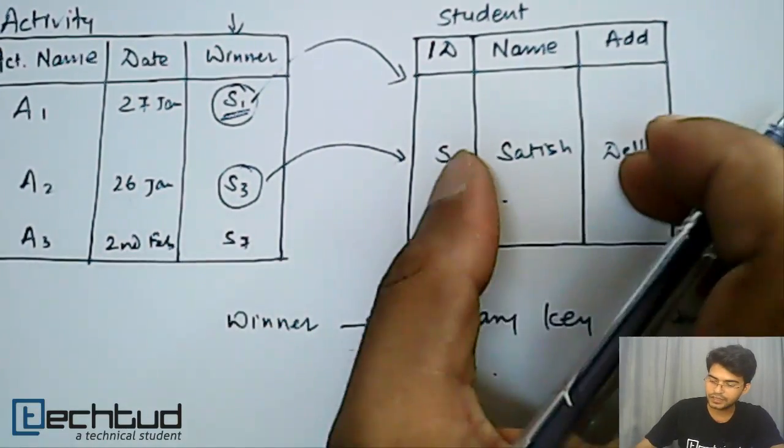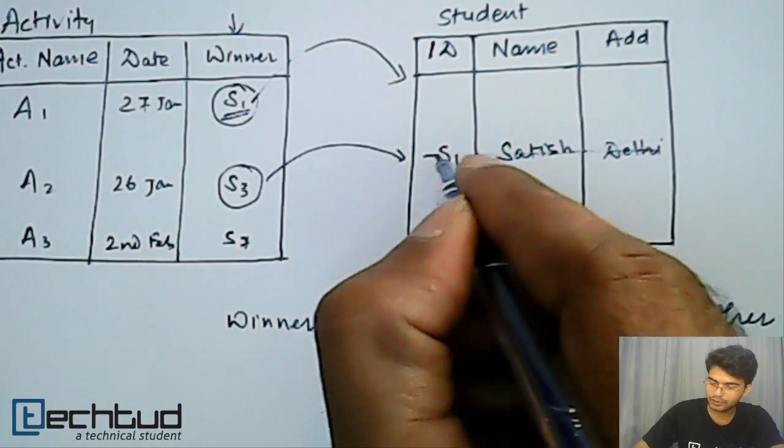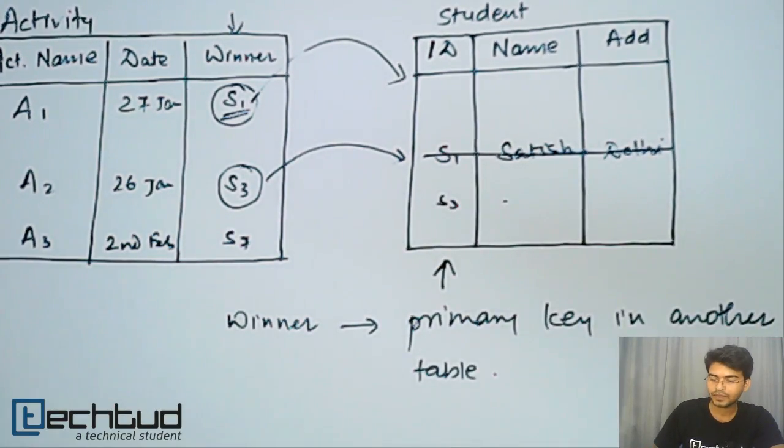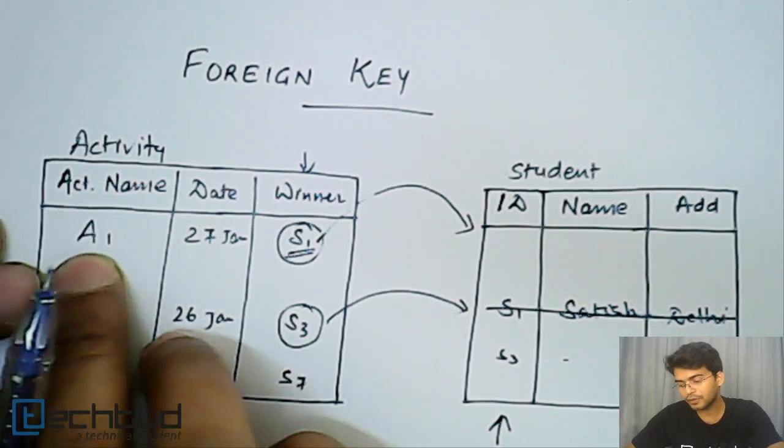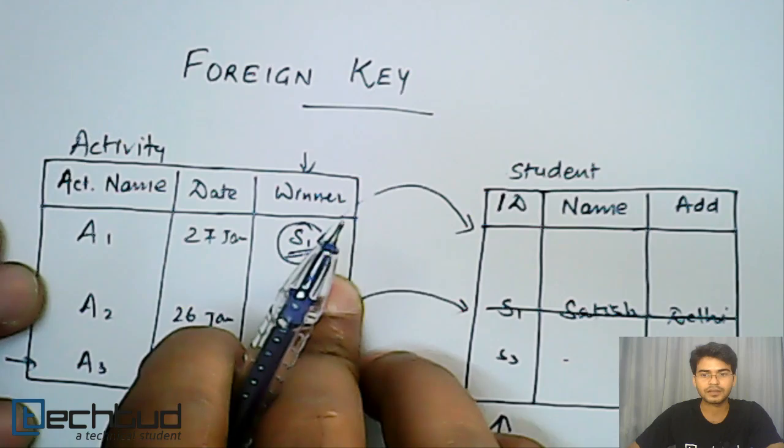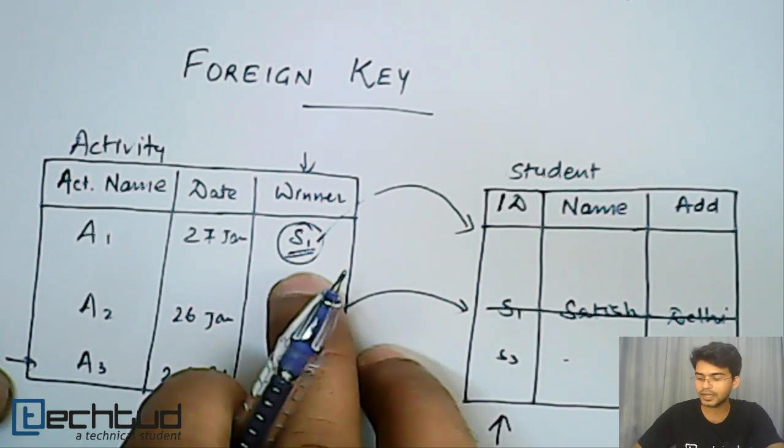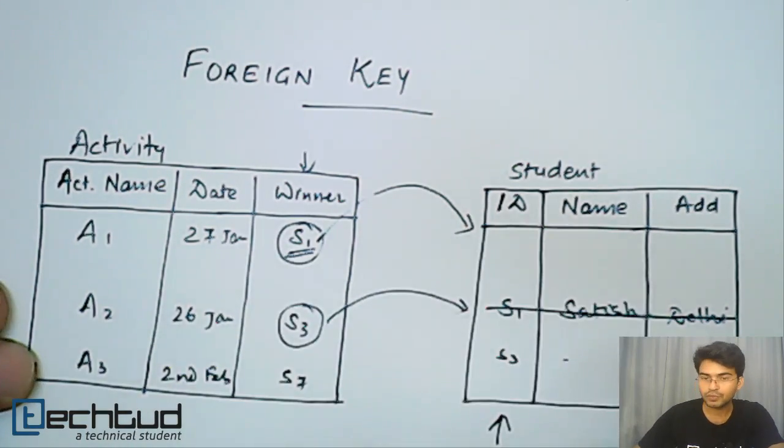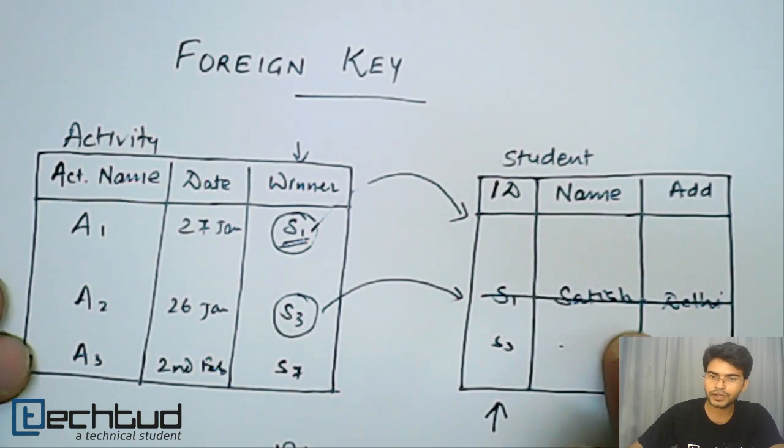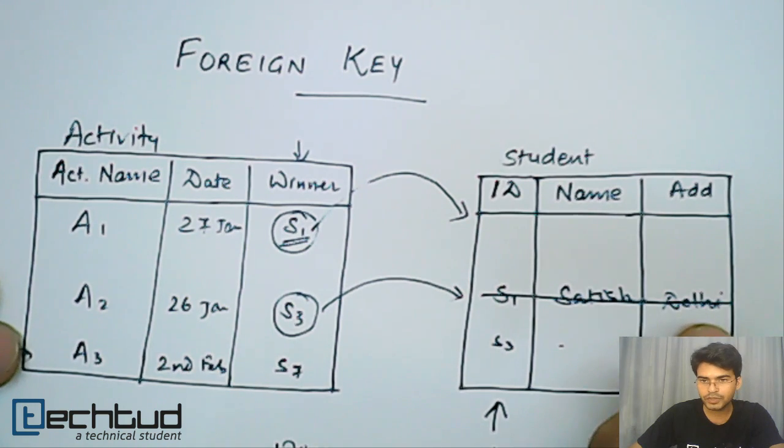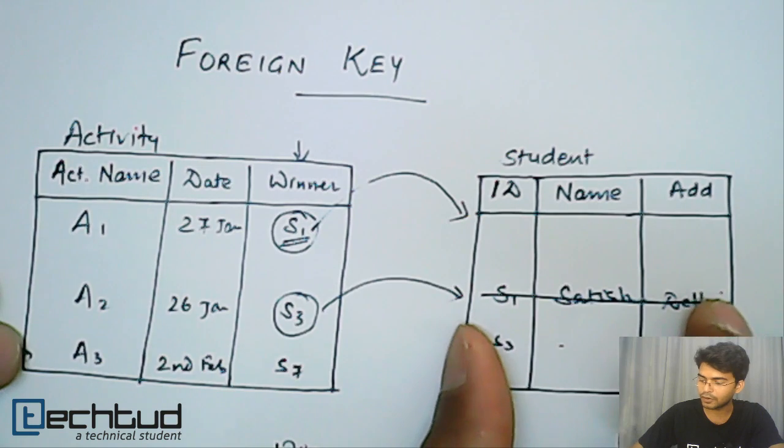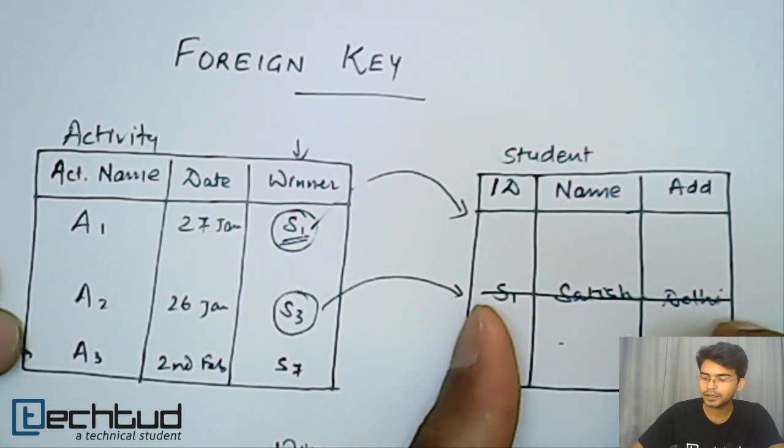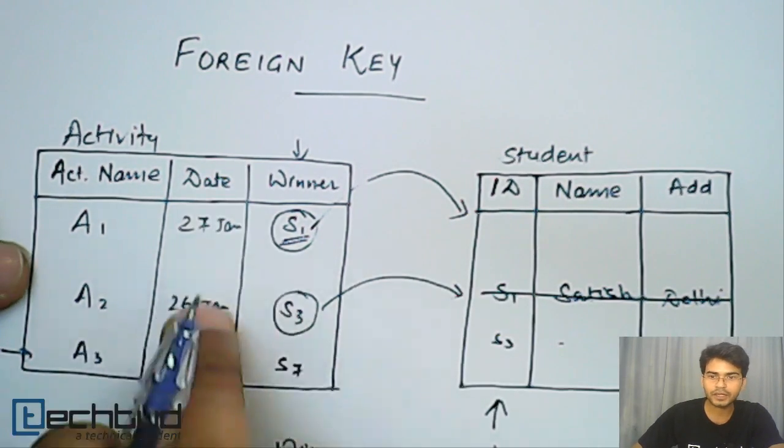So let's say somebody deletes this S1. I will delete this S1. It is now deleted, and later on somebody refers this activity table and finds, ok from this activity A1 who is the winner? So S1 is the winner. Now I would like to know more about S1 and I will refer the student table but there is no record here. S1 is already deleted. So the conclusion is that before we delete an entry from the parent table or the referred table, we have to delete all the references.